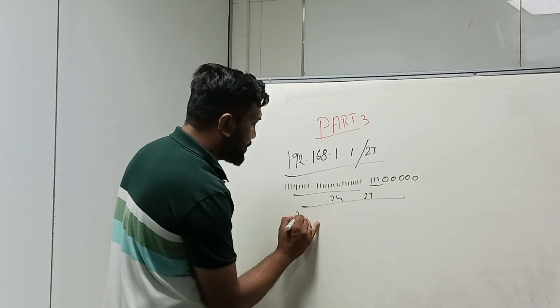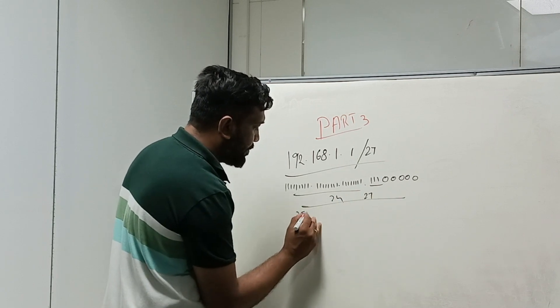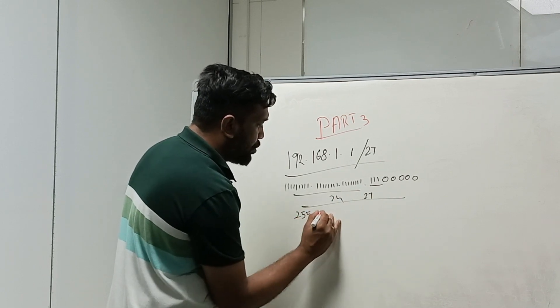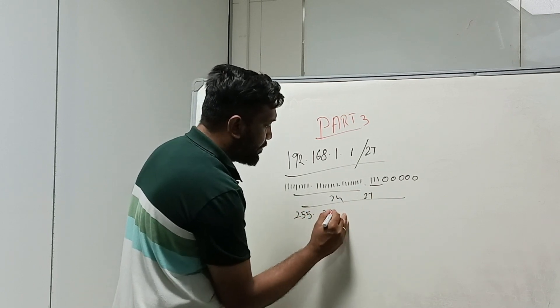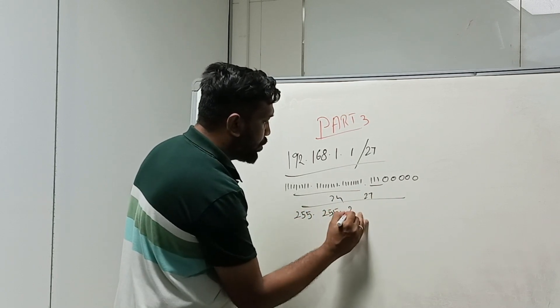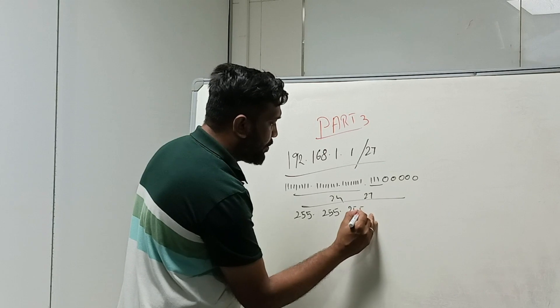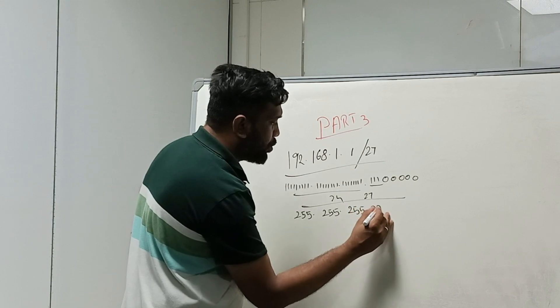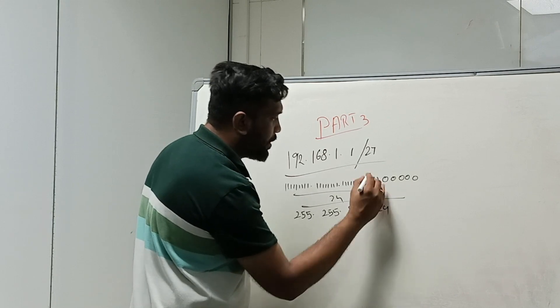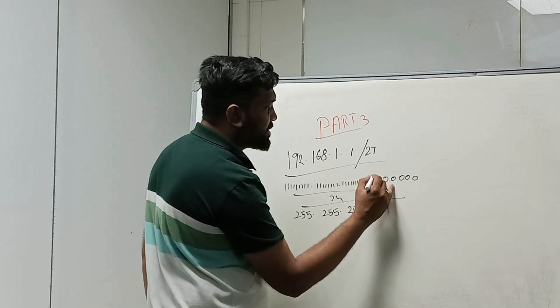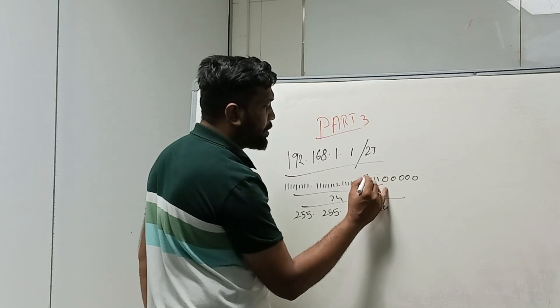So the subnet mask is 255.255.255.224. The last octet value is made up of 128 plus 64 plus 32, which gives 224.